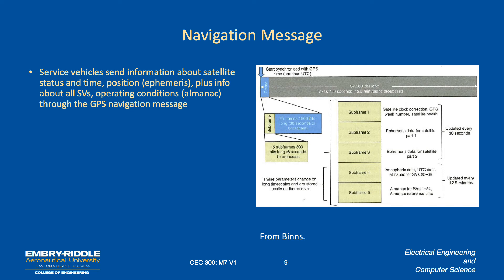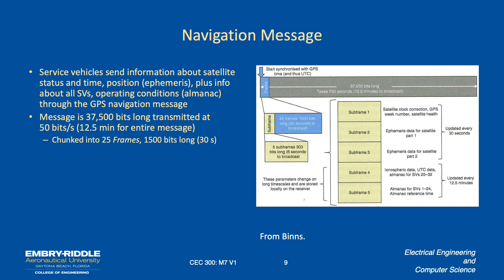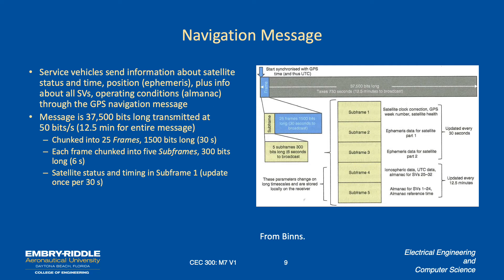The navigation message, constantly sent by the space vehicles, is packed with information. It is 37,500 bits long and transmitted at 50 bits per second, so it takes 12.5 minutes to transmit the entire navigation message. It is chunked into 25 thirty-second frames of 1,500 bits each. Each frame is made up of five subframes, with each subframe taking 6 seconds to broadcast and containing 300 bits structured into 10 thirty-bit words.